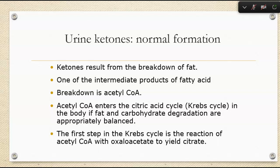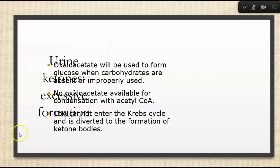When we look at urine ketones, their normal formation comes from intermediate products of fatty acid breakdown — acetyl coenzyme A. Acetyl coenzyme A enters the citric acid cycle, the Krebs cycle, when fat and carbohydrate degradation are appropriately balanced. The first step is the reaction of acetyl coenzyme A with oxaloacetate to yield citrate. The oxaloacetate will be used to form glucose when carbs are absent or improperly used. If there's no oxaloacetate available for condensation with acetyl coenzyme A, it's diverted into the formation of ketone bodies.